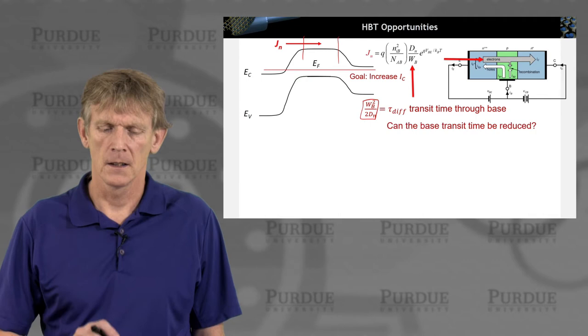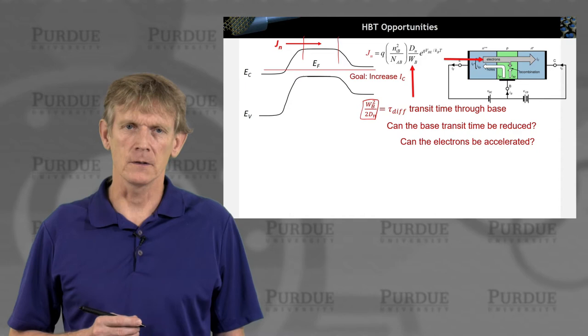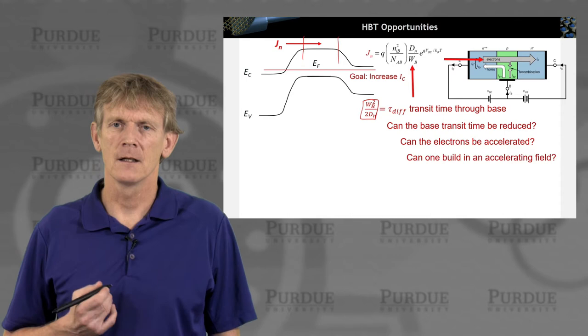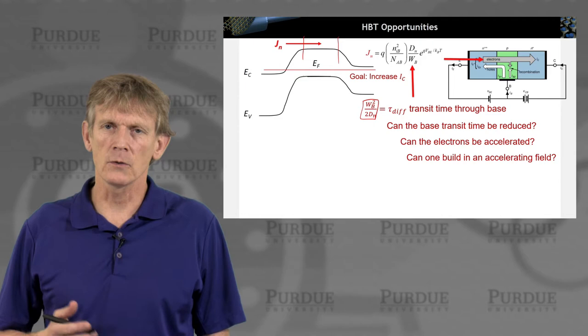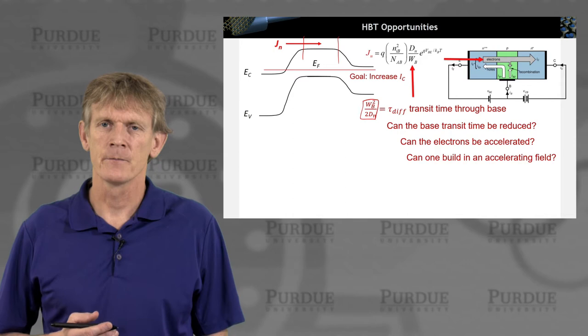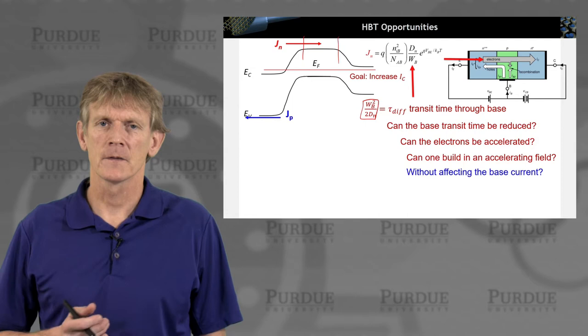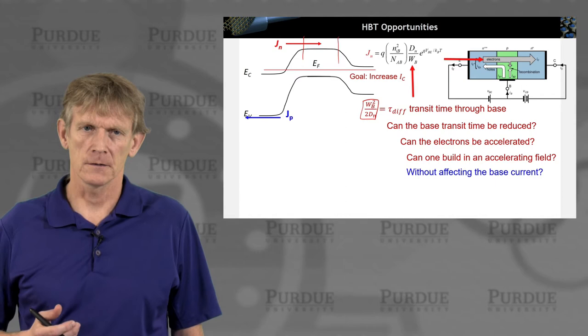And the question is, can you accelerate the electrons? How would you accelerate electrons? You would do that by having an accelerating field. But you don't want to attach yet another gate to speed things up or slow things down, right? But can you build in an accelerating field? And can you do all of that without affecting the base current? Because we want to keep that as low as possible.